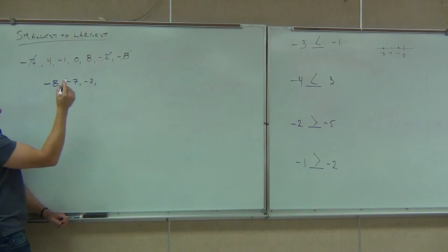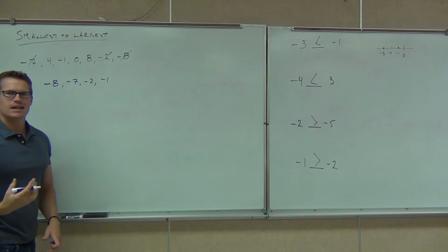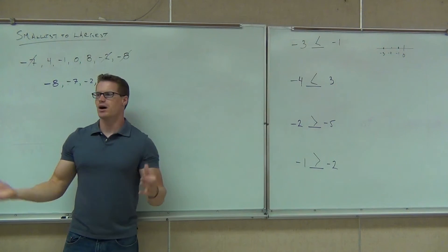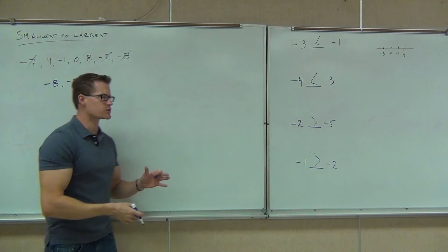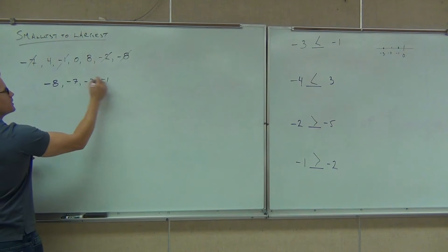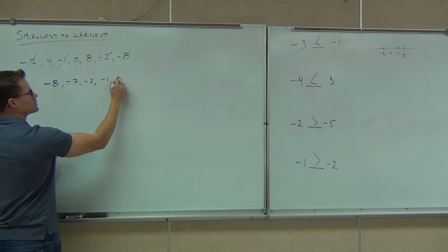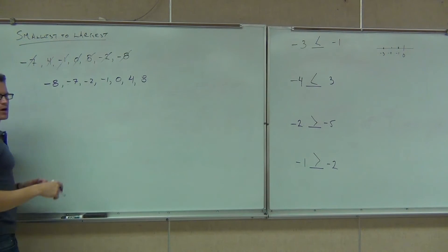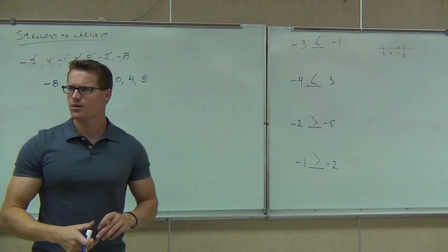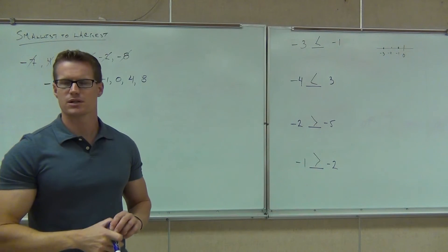Right next to it, going to the right on the number line, we're going to have negative seven. What's the next one? Well, that's our last negative number. Any negative is going to be smaller than any positive. So negative one comes next. Then we have zero, then the four, and then we're back to positive numbers. Did you get it right in smallest to largest? Good deal.